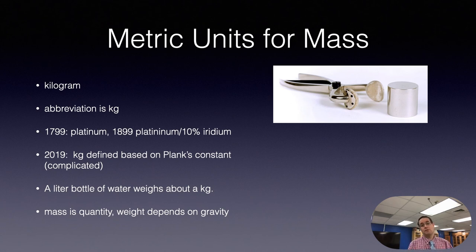The mass can change over time, maybe the replicas had an error associated with them, so what they did in 2019 was redefined the kilogram based on something called Planck's constant. We won't see this for quite a while in the class. In case you're wondering, the mass of about a liter of water is about a kilogram. So if you have a liter bottle of water around your house, just lift that up, that's about a kilogram, and that weighs about a little bit more than two pounds.